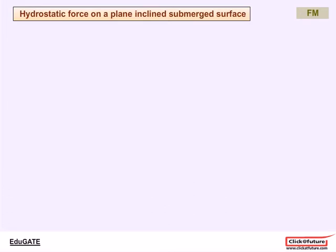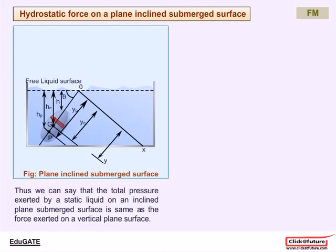Thus we can say that the total pressure exerted by a static liquid on an inclined plane submerged surface is the same as the force exerted on a vertical plane surface. Now, the sum of the moments of all the pressure forces acting on the surface about any point must be equal to the moment of the resultant force about the same point.